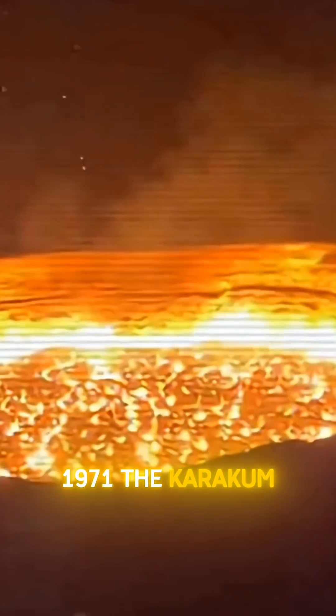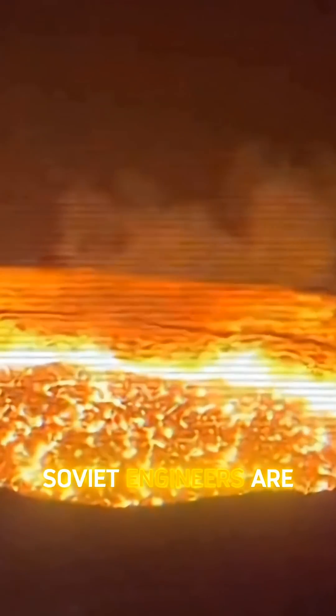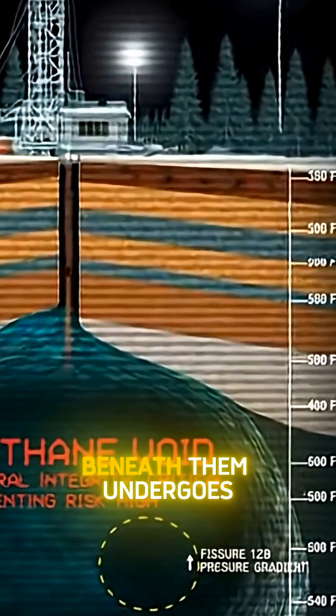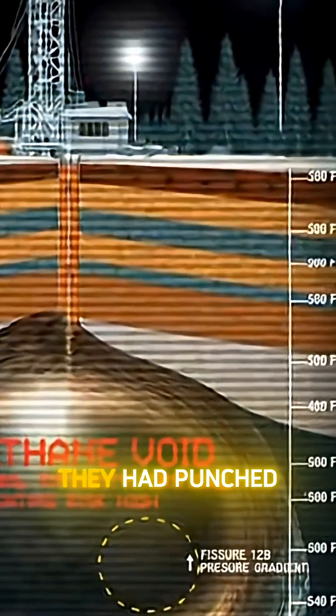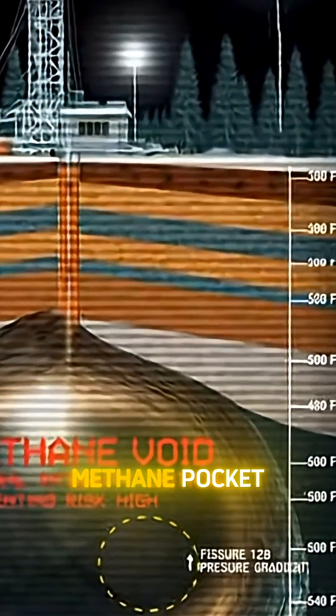1971. The Karakum Desert. Soviet engineers are drilling for oil when the ground beneath them undergoes rapid liquefaction. They hadn't hit oil. They had punched a hole into a massive subterranean methane pocket.